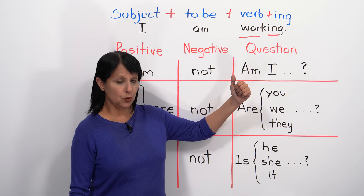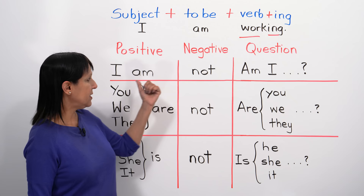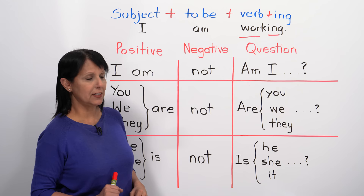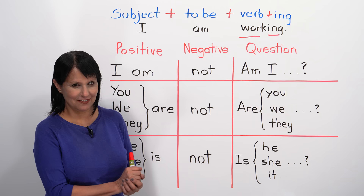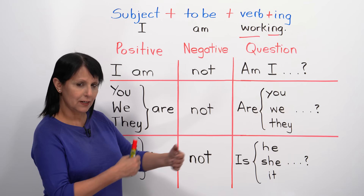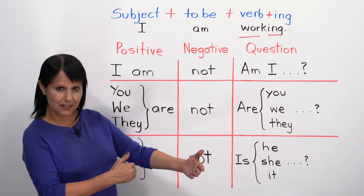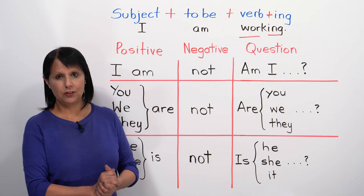And in questions, we reverse the order. Instead of 'I am,' we say 'Am I?' Instead of 'You are,' we say 'Are you?' The full question forms are: Am I, are you, are we, are they, is he, is she, is it. Make sure you can use the verb 'to be' correctly so that you can use the present continuous tense correctly.